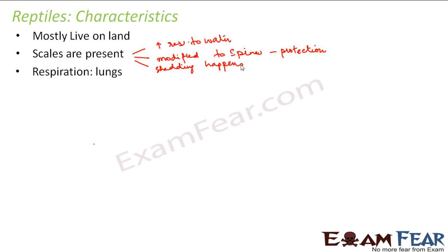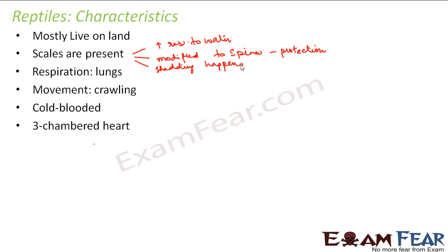Respiration happens through lungs. Movement is through crawling. When we talk of reptiles, the examples would be lizards. You can see some scales are present on them, but they may be shed in due course of their lifetime. They are also cold-blooded, meaning they take the temperature of their surroundings. They have a three-chambered heart, like amphibians — the exception is the crocodile, which has a four-chambered heart. Examples of reptiles include lizards, turtles, crocodiles, and chameleon.